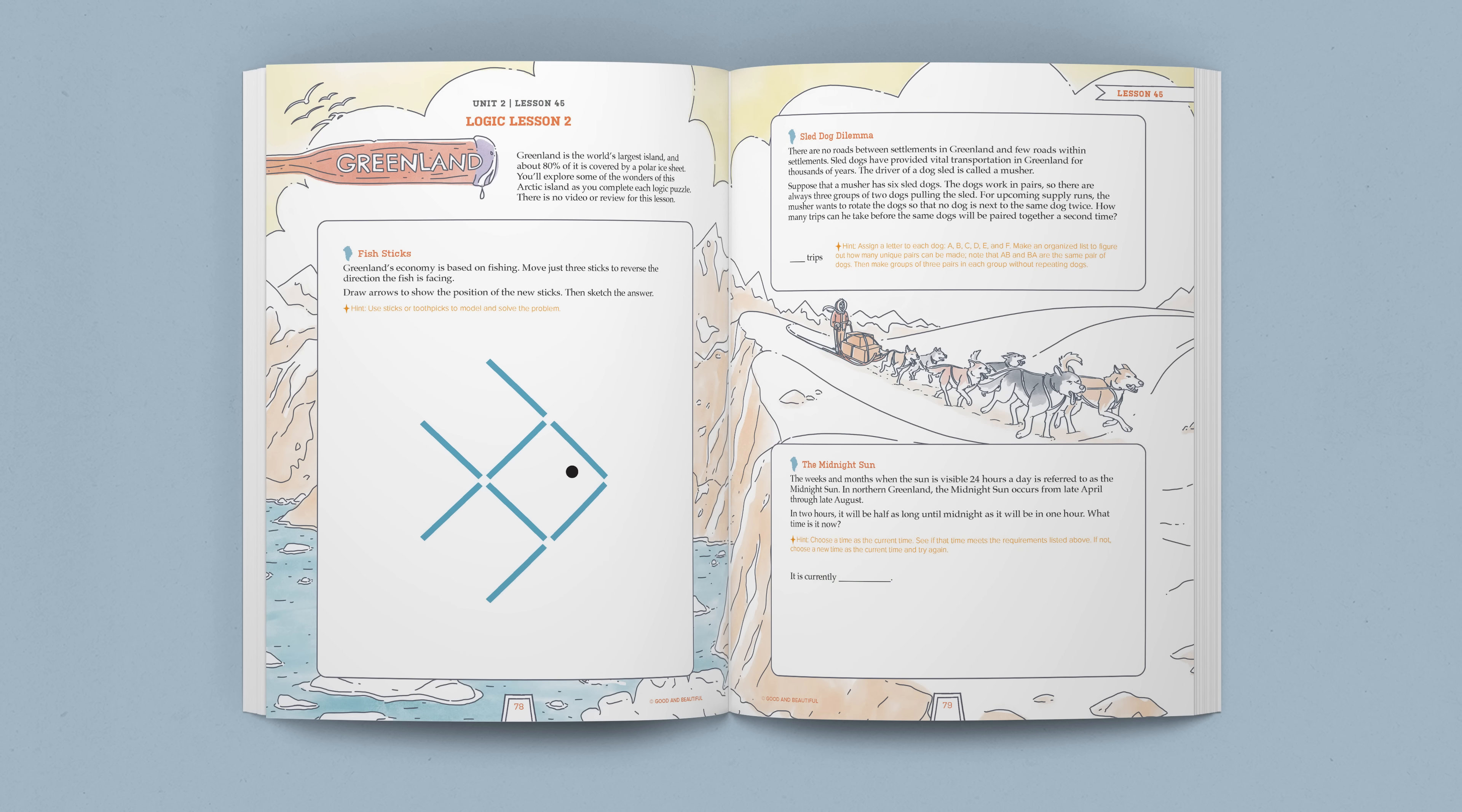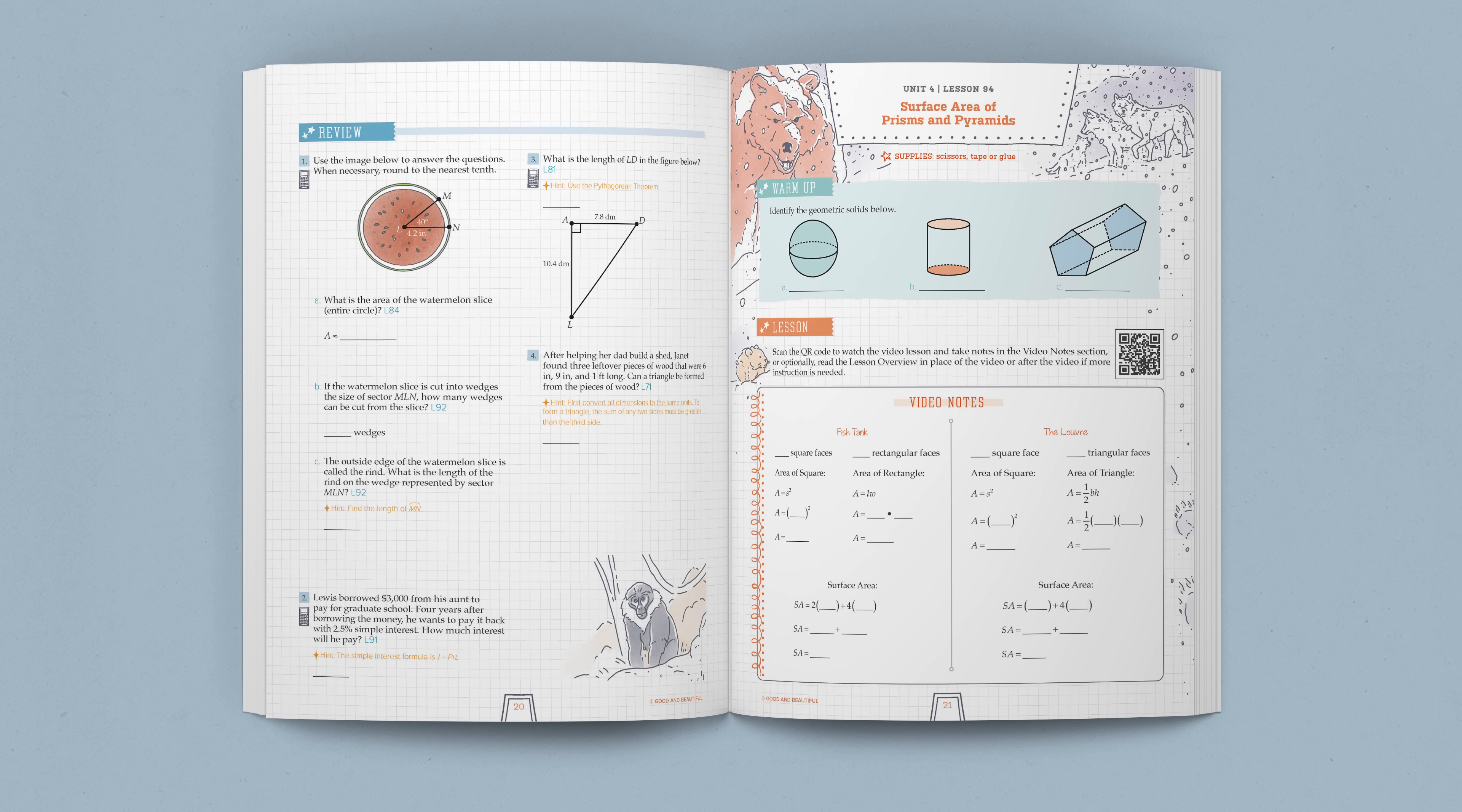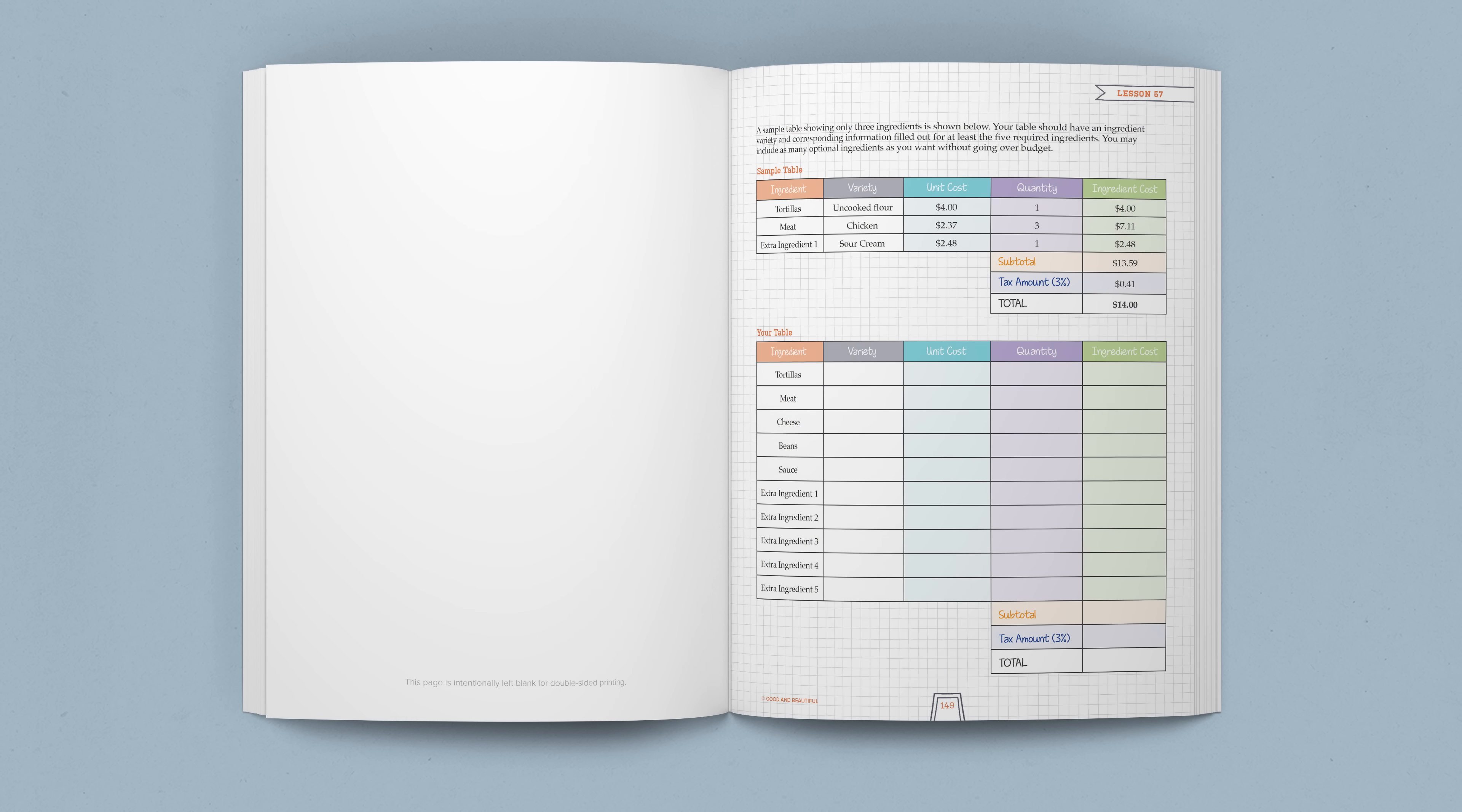Many lessons use puzzles and other activities to cement concepts. For example, Lesson 45 is a logic lesson in which students learn about the country of Greenland as they have fun solving puzzles. And with hands-on learning in Lesson 94, the surface area of prisms and pyramids is taught as students cut out and assemble these shapes. In Lesson 57, students have the opportunity to work within a given budget to create a menu and practice with percentages.